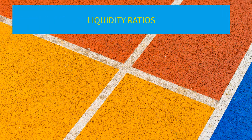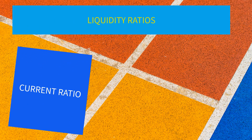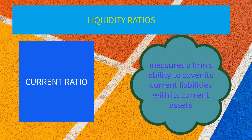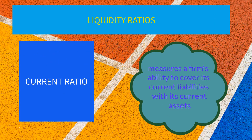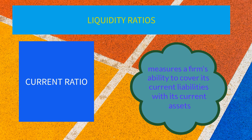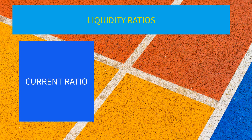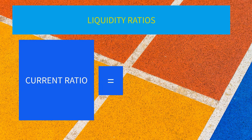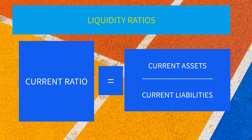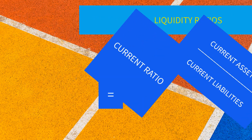There are two commonly used liquidity ratios, namely current ratio and quick ratio. Current ratio measures a firm's ability to cover its current liabilities with current assets. The formula for current ratio is current assets divided by current liabilities.